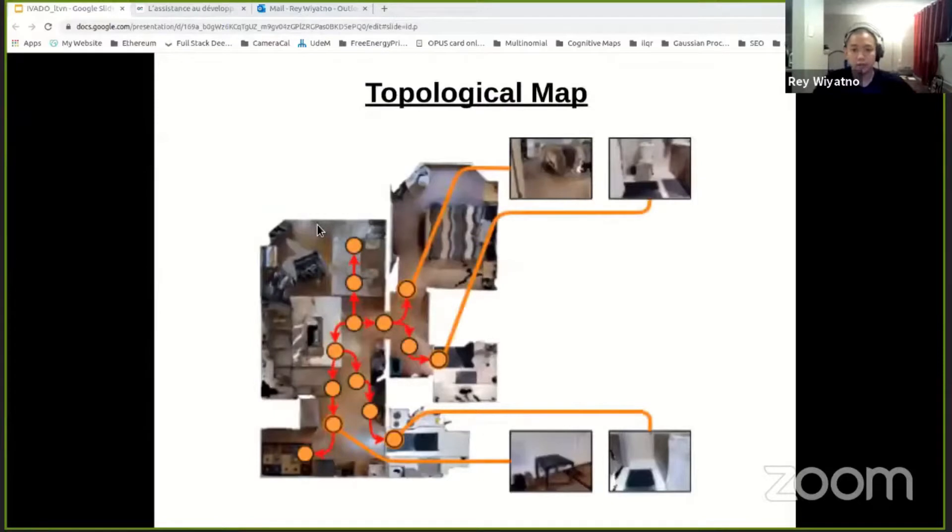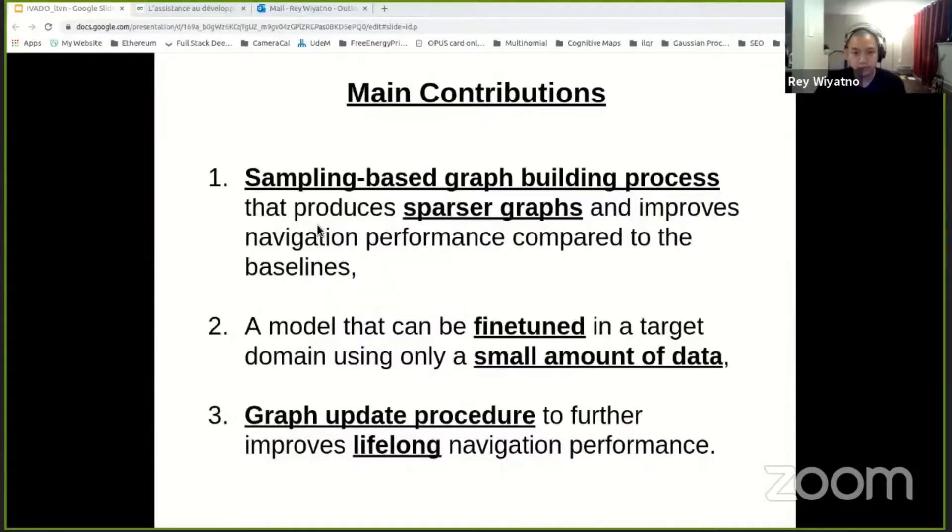So in this work, we're interested in another type of map, not a metric map, but another type, what's called a topological map. Here, we represent a map as a graph, where the nodes correspond to images of particular locations in an environment, and the edges correspond to traversability between the nodes.